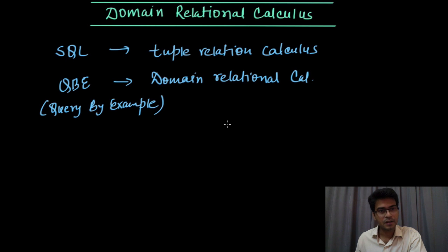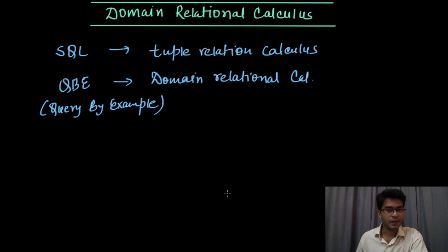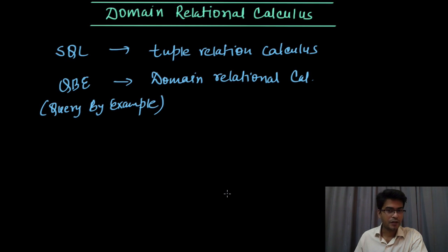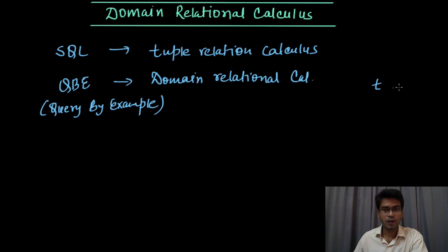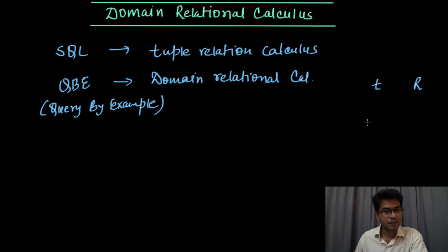Now, what is the basic difference between tuple relational calculus and domain relational calculus? In domain relational calculus we will be operating over the domain of attributes, while in tuple relational calculus we used to operate over tuples. The range of a tuple was the tuples belonging to a particular relation — for a tuple variable t it used to range over all the tuples for a relation r. Here in domain relational calculus we will have domain variables, similar to tuple variables in TRC, and they will range over the domain of an attribute.